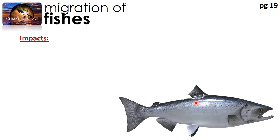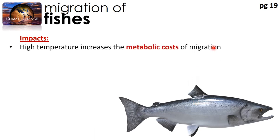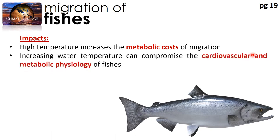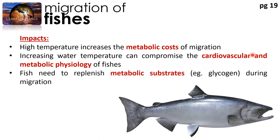Speaking of salmon populations, in some species like the Chinook salmon, high temperatures increase the metabolic cost of their migration. Chinook salmon often migrate hundreds of kilometers from their natural riverine areas to the ocean and return to their natal areas for spawning. Salmon prefer relatively cool water, and increasing water temperatures will compromise their cardiovascular and metabolic physiology. These fish often need to rest and stop to replenish their metabolic substrates during migration, typically resting in tranquil warm water — but if that water continues to increase in temperature, this will create problems.